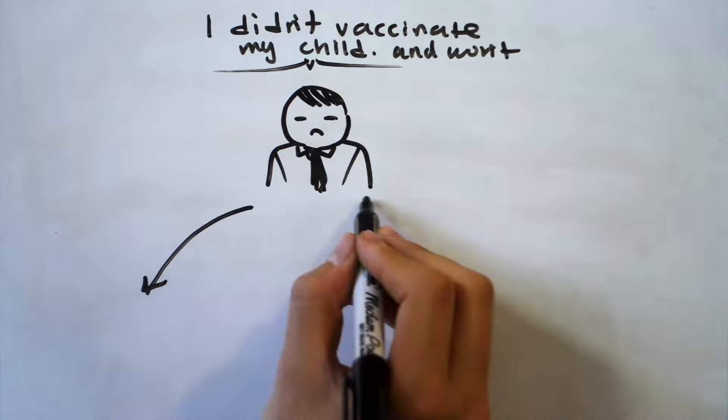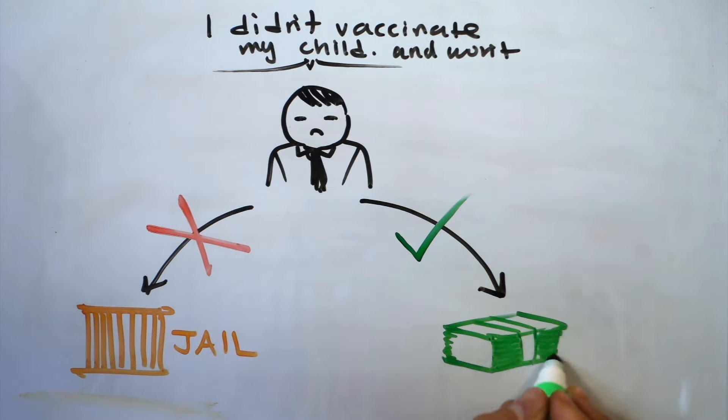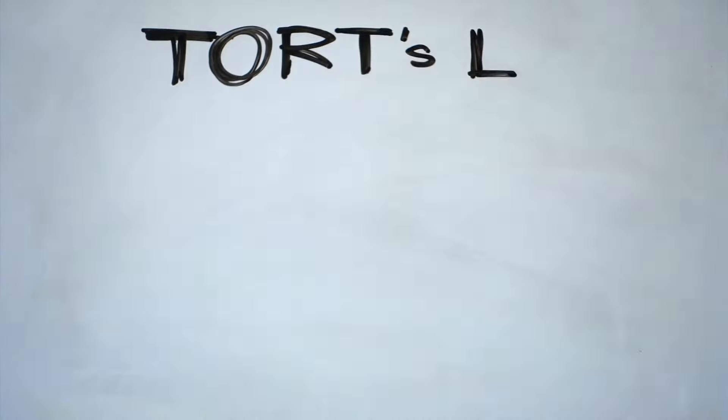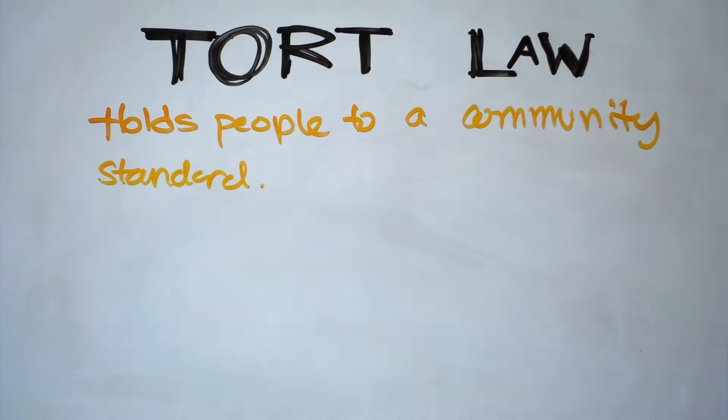Of course, there should be a right not to vaccinate your child and those who do exercise this right shouldn't be put in jail. However, it's arguable that choosing not to vaccinate is negligent. America's tort system holds people to a community standard, and if they deviate from that standard, compensates those harmed.